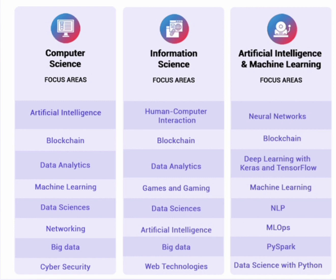Big data is another subject found in both computer science and information science. In AIML, big data is essentially covered as deep learning — using algorithms and models with Keras and TensorFlow. So the skill sets are almost similar across branches in this area. Another difference is cyber security, which is present in computer science but not in information science and not in AIML.